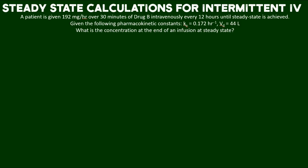To do this we're going to use a special equation for intermittent intravenous infusion scenarios, specifically at steady state. This equation includes the infusion rate k naught or k sub zero, the elimination rate, and the volume of distribution on the left side of the equation.